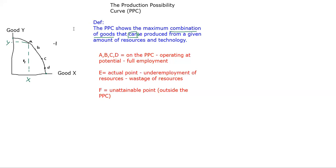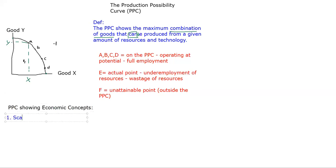There are a few major ways the PPC is used to test you. The first is PPC showing economic concepts. The first concept is scarcity - the presence of unlimited wants but limited resources. You might have infinite wants, but you can't satisfy all of them. Scarcity is shown through the frontier of the PPC because it shows that even if you're 100% efficient, you can potentially produce on points A, B, C, D on the frontier.